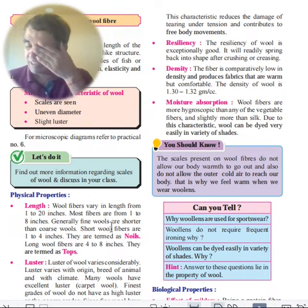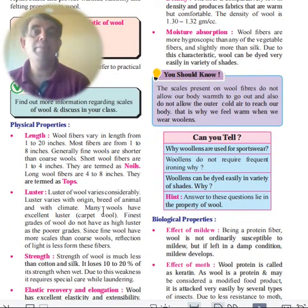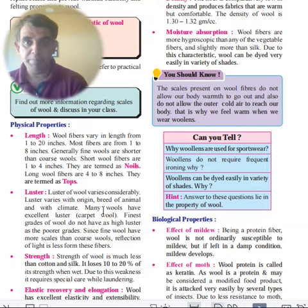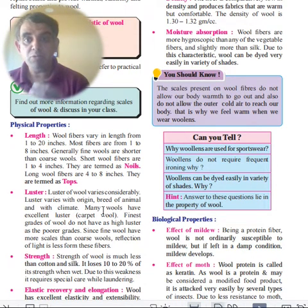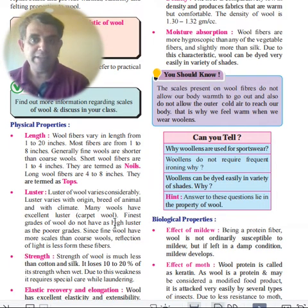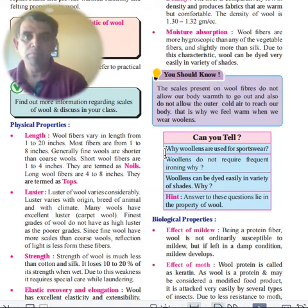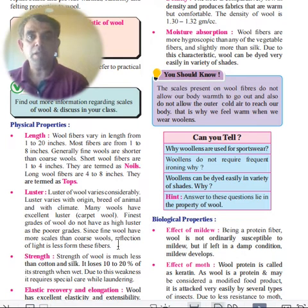Luster varies depending on the origin and breed of the sheep and climate. Many carpet wools have excellent luster. Importantly, finest quality wools do not have high luster — poor quality wool has greater luster — because fine wool has more scales, which reduces light reflection.